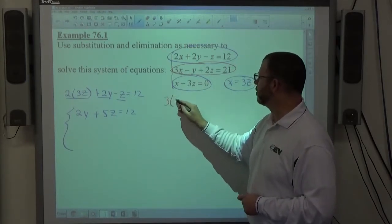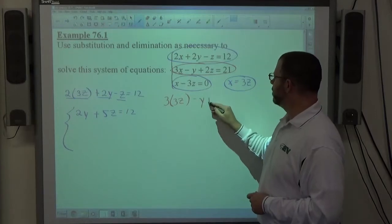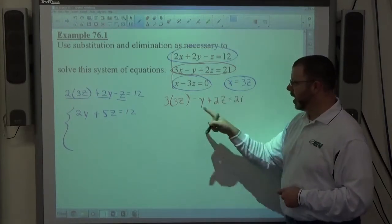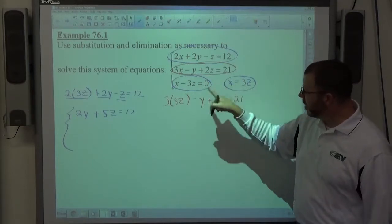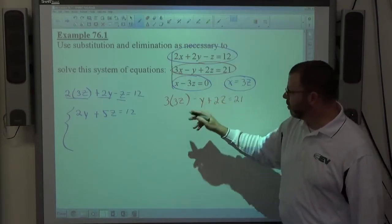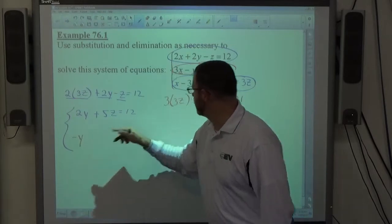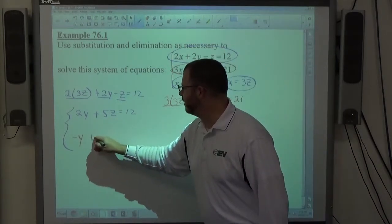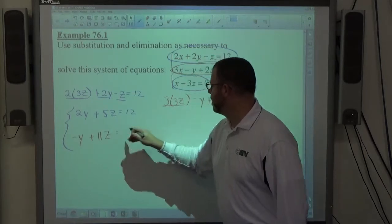Then if I go back to this second equation and change this X into a 3Z, that second equation becomes 3 times 3Z minus Y plus 2Z is equal to 21. And again, combining like terms and all that stuff, alphabetic order, negative Y. This is 9Z plus 2Z makes plus 11Z equals 21.